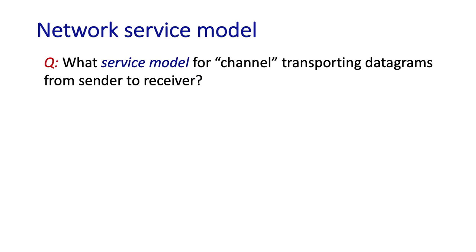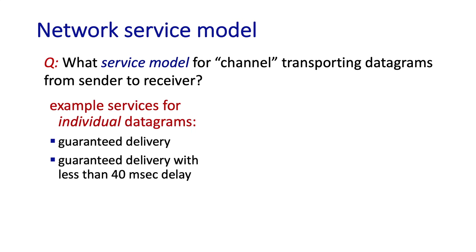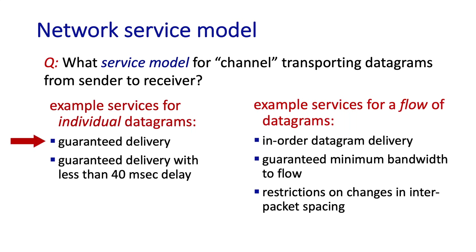Let's wrap up our introduction to the network layer by discussing the service model for datagram delivery by the network layer from sending host to receiving host. What are the properties of this service? For instance, guaranteed delivery: the network layer might guarantee that a packet sent by a source host will eventually arrive at the destination host.